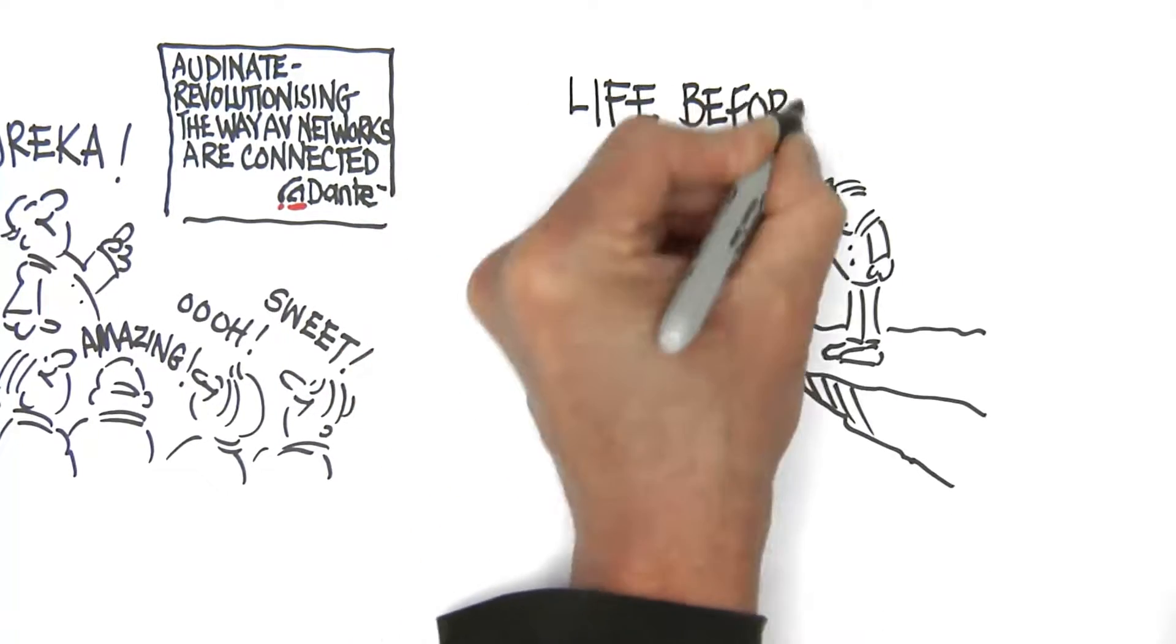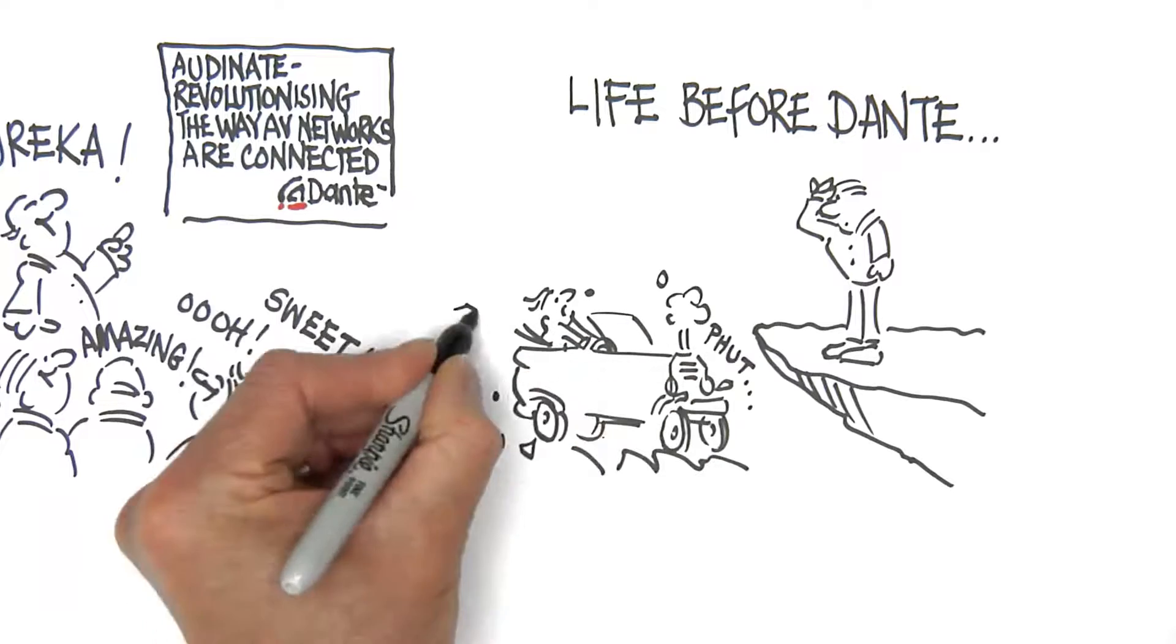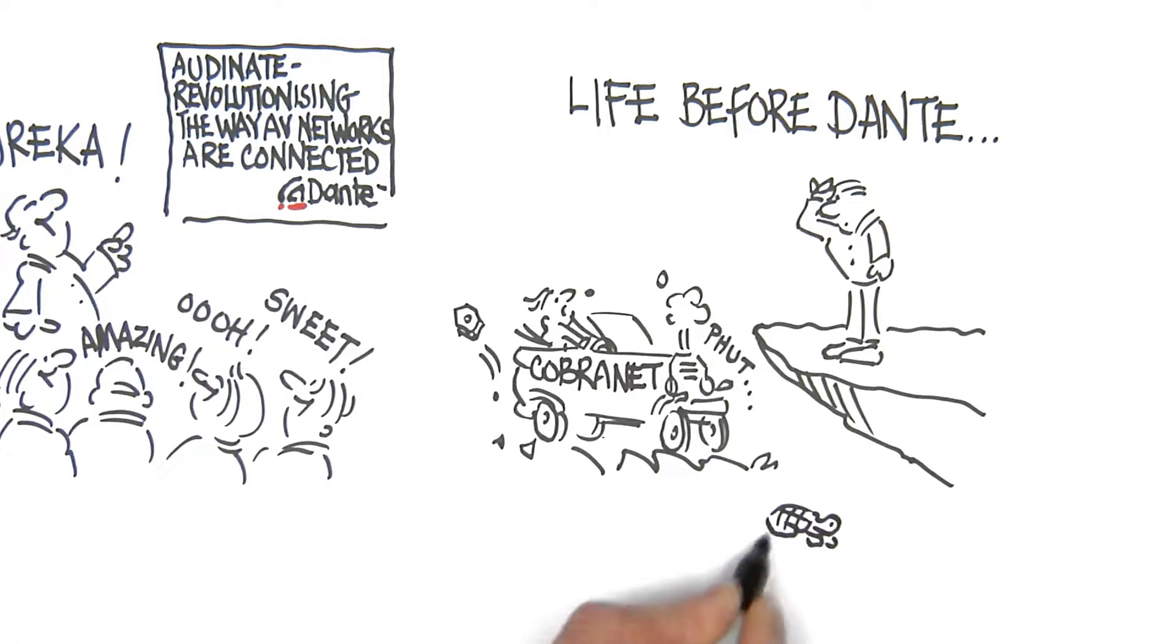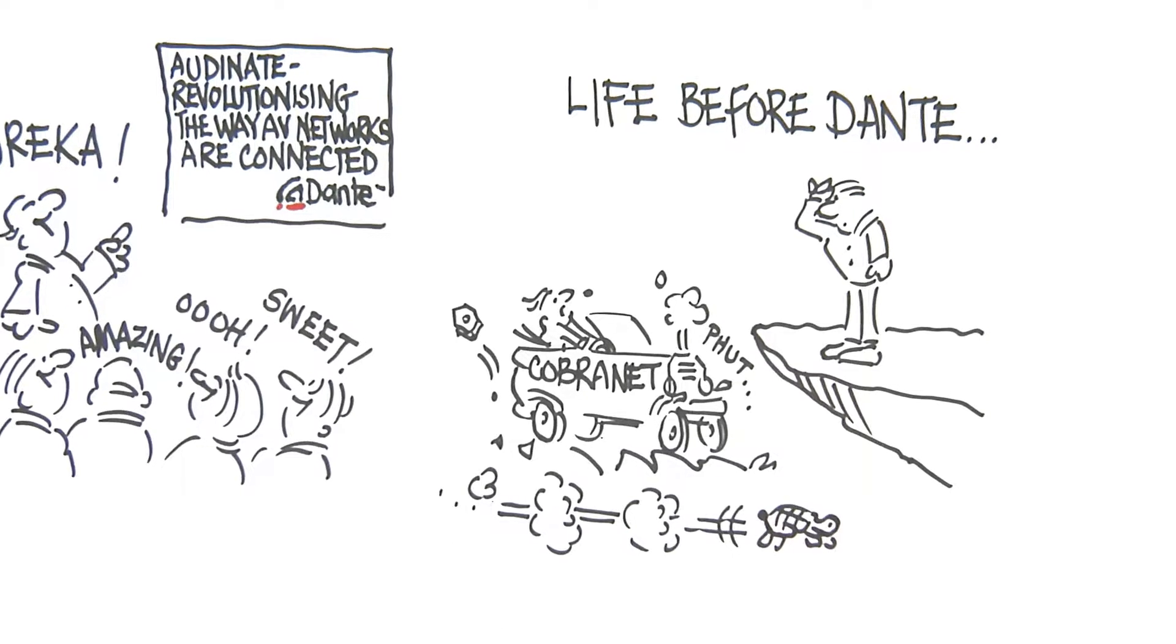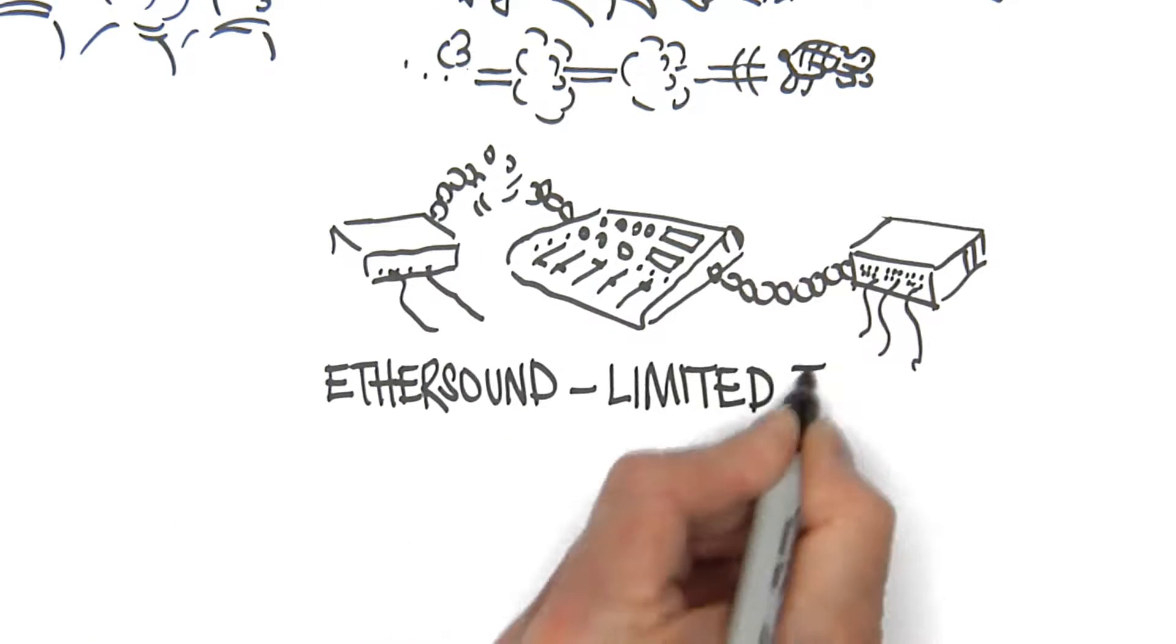Life before Dante was complicated. If you wanted a large network, with CobraNet you had to accept high latency with slow network speeds. If you wanted low latency, you could get it with aether sound but with limited network topology.